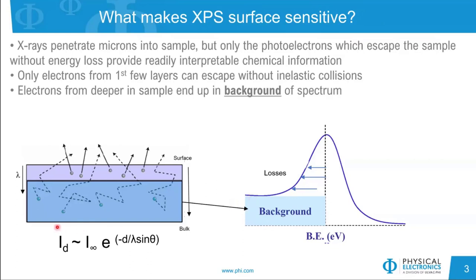There is a fundamental relationship between the intensity of photoelectrons at specific depths as a function of depth, lambda — the inelastic mean free path — and sine theta. We will go through these particular parameters in the next slides.